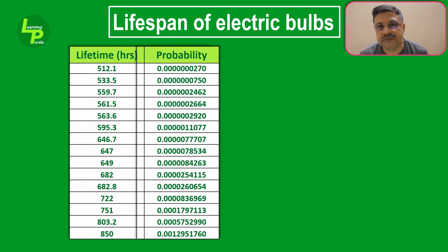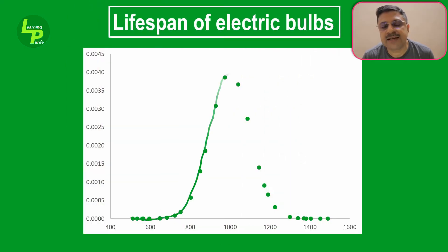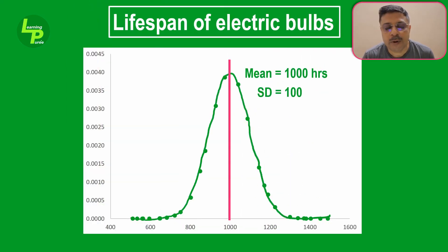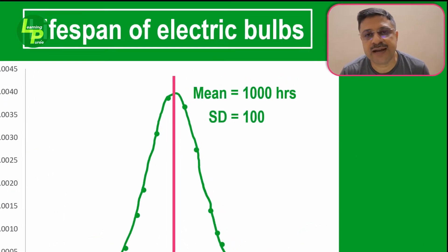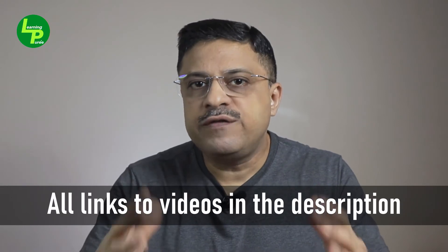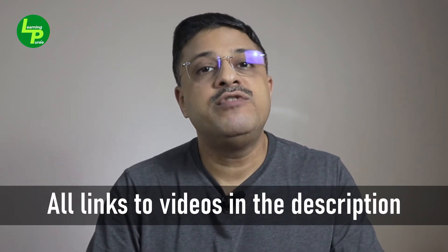Following is the data for the distribution, and this is the graph for the continuous probability distribution. From a previous testing exercise, the manufacturer has found that the bulbs manufactured in the factory last on an average for about 1000 hours with a standard deviation of 100. The equation for generating this data has been shared in my previous video, which also explains how the data was generated. The links to these individual videos are posted in the description below and in the info card posted above.